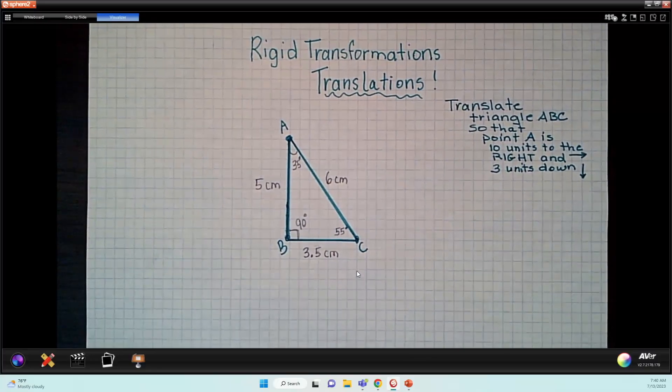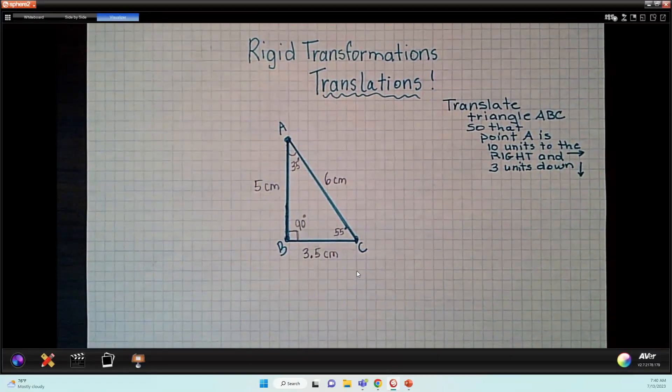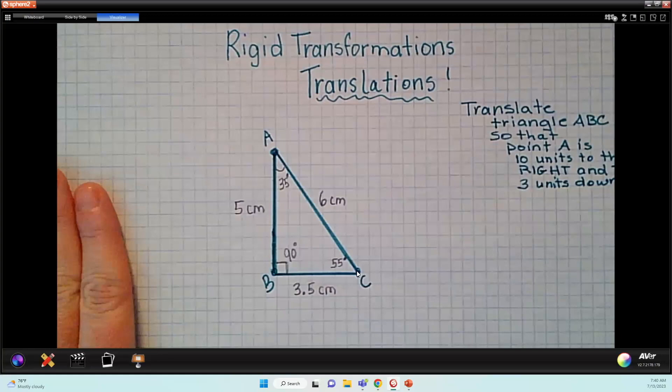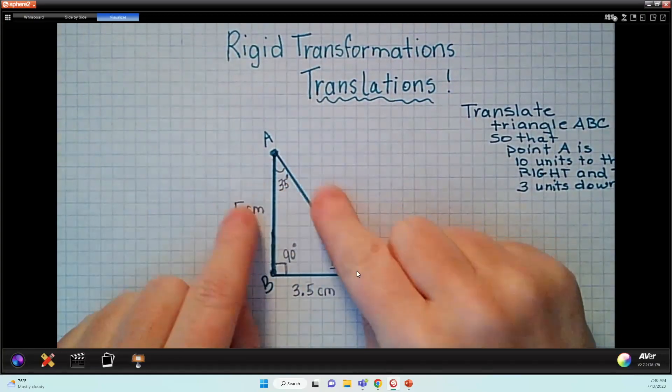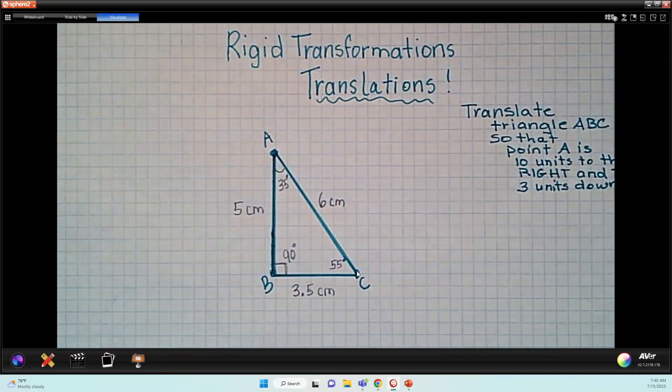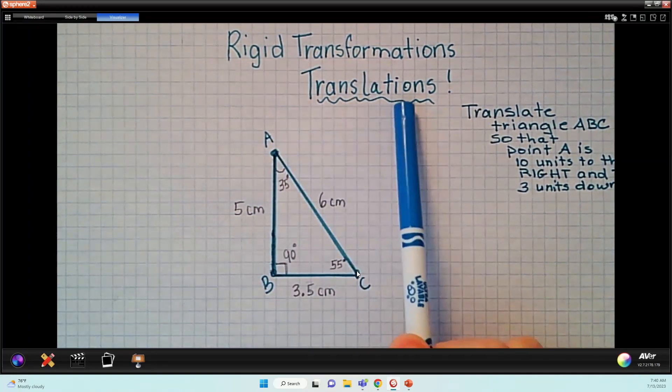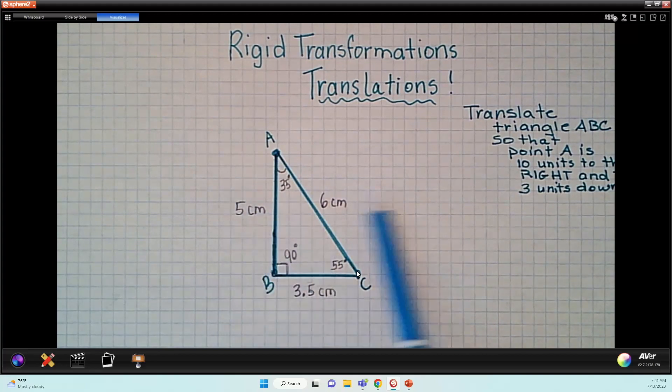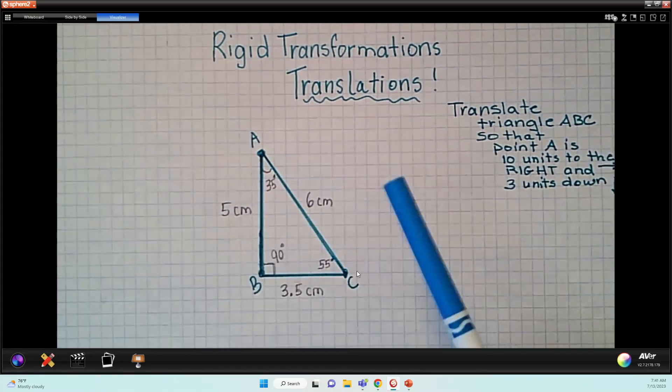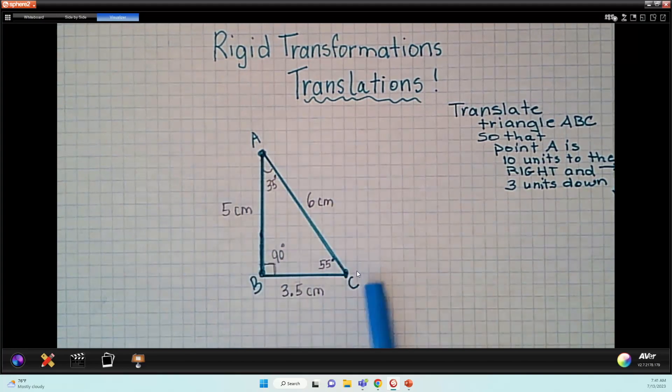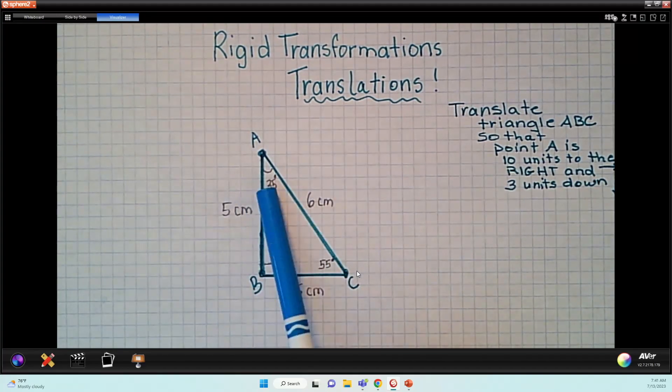So I have the first one up, Rigid Transformations. The word rigid just means that we're not changing anything about the angles or the lengths of the sides. We're going to move this shape. We're going to translate. Back in elementary school, they learned it as a slide. And we're not going to change anything about it. We're going to keep everything the same, length of sides, angles.